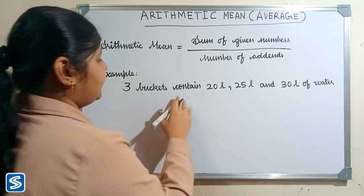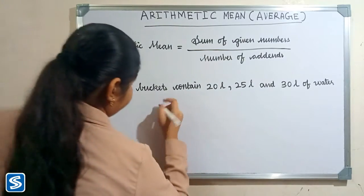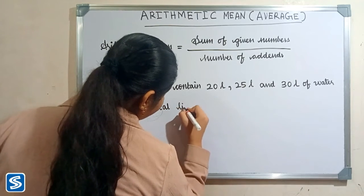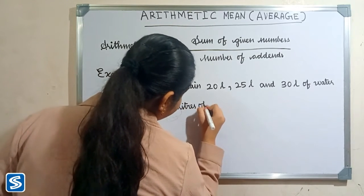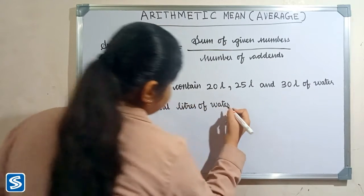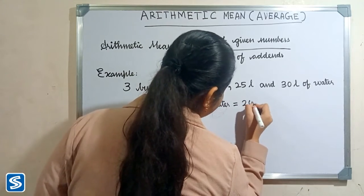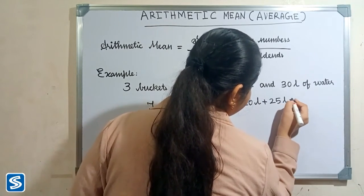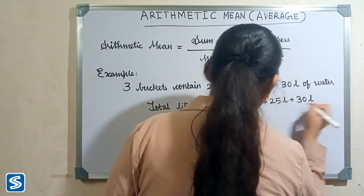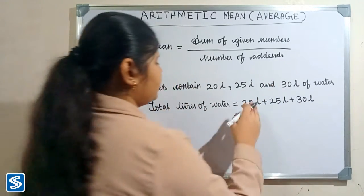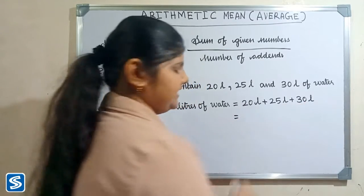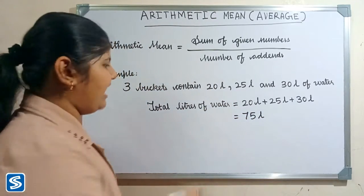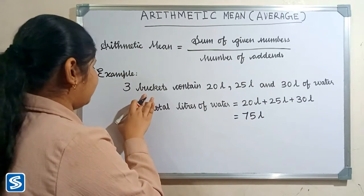First, we have to find the total liters of water. So, total liters of water is equal to 20 liters plus 25 liters plus 30 liters, which equals 75 liters. Next, we have to find the number of buckets, and here the number of buckets is 3.